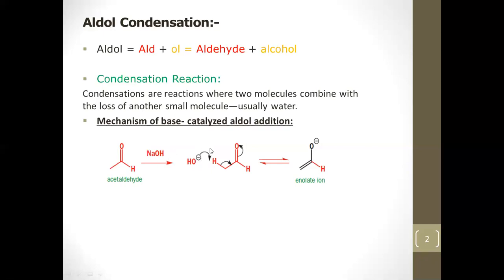A base will come and remove this alpha hydrogen. Why is the alpha hydrogen removed and not the other hydrogen? The alpha hydrogen is more acidic. If you remove the other hydrogen, the electron density of the double bond would become problematic. That's why only the alpha hydrogen is removed.